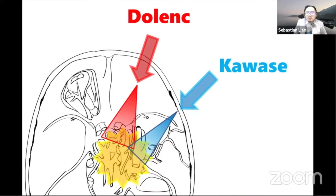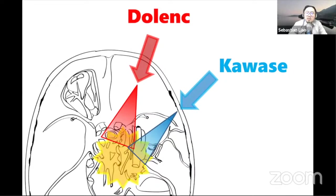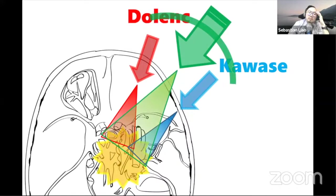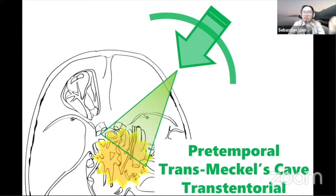Professor Sami has also talked about the retrosigmoid approach. Today my approach is the transmacroscape approach, which consists of two combined approaches: the Leng approach and the Kawase approach. As previously mentioned, the Kawase approach is a limited exposure and has to be combined with other approaches to gain more surgical corridor to treat a large petroclival meningioma. We call this combined approach the pre-temporal transmacroscape transtentorial approach.